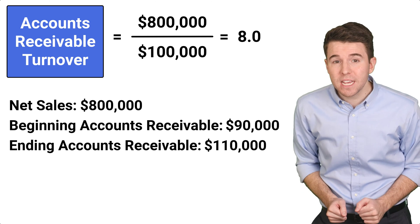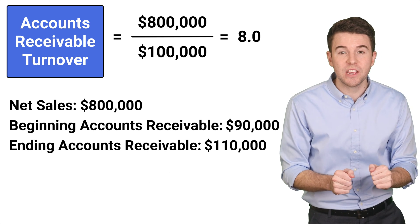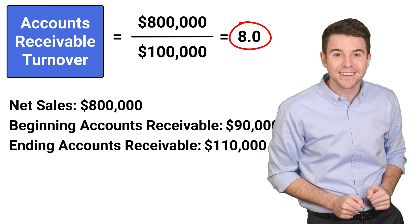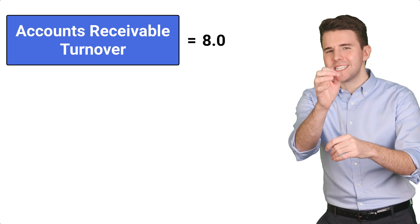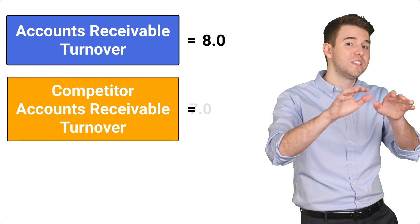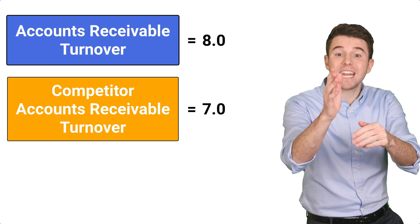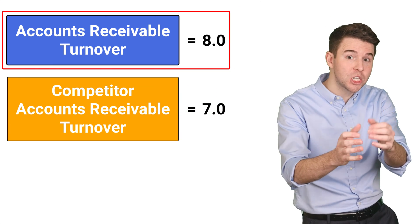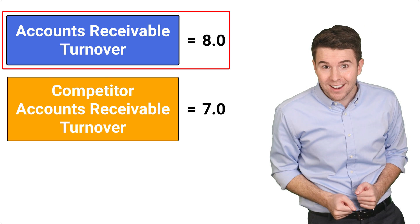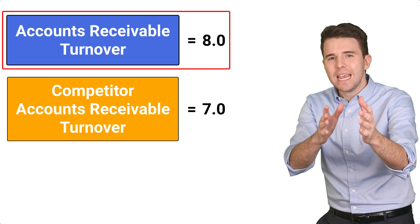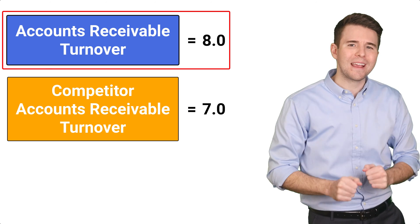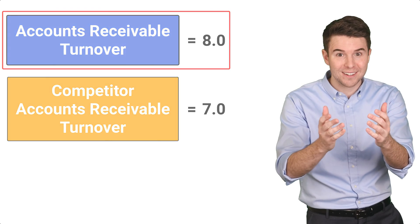This means that the company converts its average accounts receivable into cash eight times during the period. A competitor has an accounts receivable turnover ratio of seven, meaning our example company with a ratio of eight is collecting money faster — it may have a more efficient collection process or stricter credit granting policies.